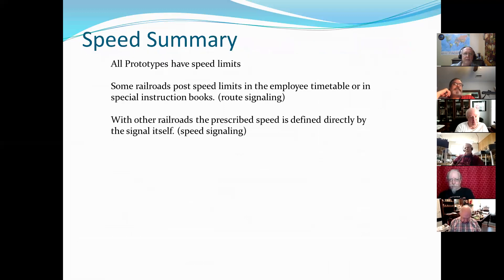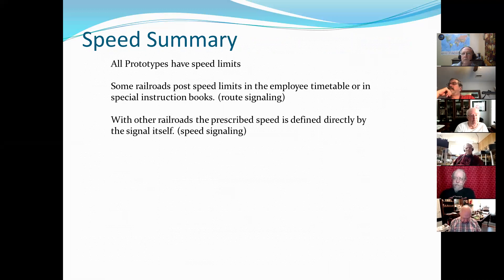Speed summary: all prototypes have speed limits. Some railroads post them in their employee timetable — this is called routing signals. Some put them right on the signal as an aspect — this is called speed signaling.